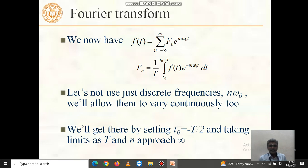Let us not use just discrete frequencies n omega naught. We will allow them to vary continuously too. We will get there by setting t naught equal to minus t divided by 2 and taking limits as t and n approach infinity.